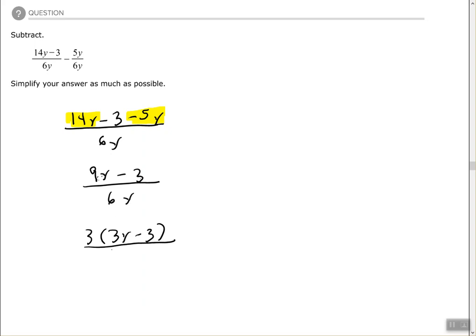You can see we can cancel those common factors, the 3s in the numerator and denominator. We end up with 3y minus 3 over... wait, I'm sorry. When we factor out that 3, it should be 3y minus 1 over 2y.